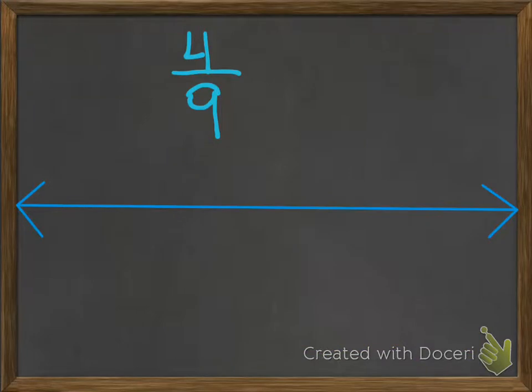I want you to try 4/9. Pause the video and see if you can find 4/9 on a number line. Good luck. How did you do? Well, this one's a little different. The ones before we divided into tenths, but this has a 9 in the denominator. So we do not divide the number line into tenths. We divide it into ninths.